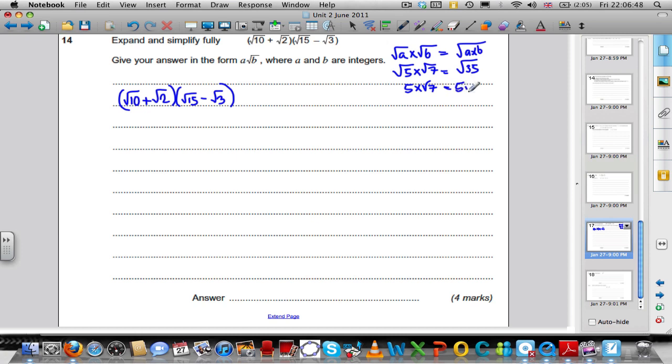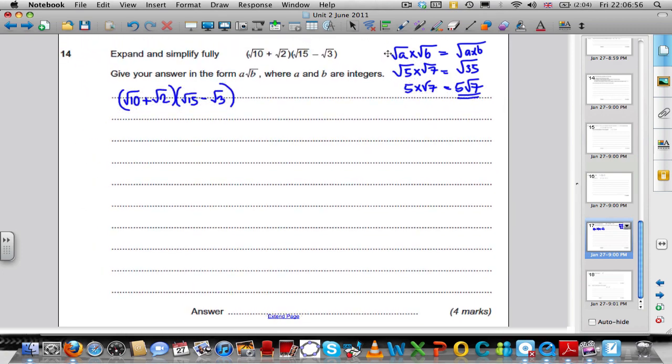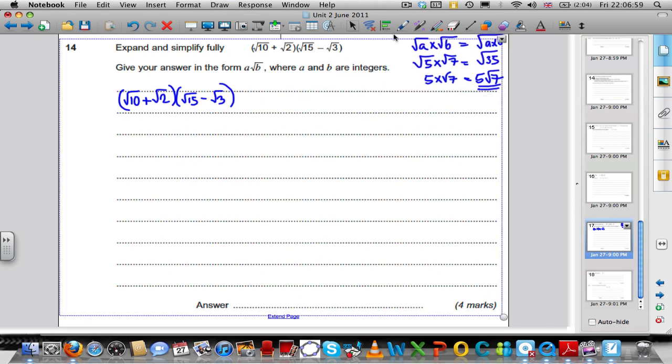But 5 times the square root of 7 is not the square root of 35. That's just, for example, 5 lots of root 7 that a mathematician writes like that. So that's just a bit of background to help us through here. Okay, here we go.